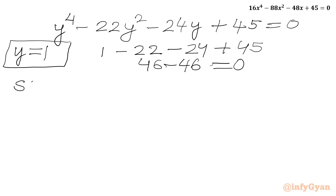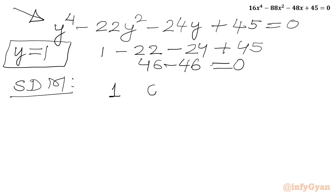Now we can use the synthetic division method. In this method we will write all the coefficients of the quartic equation. Coefficient of y⁴ is 1, coefficient of y³ is missing so we write 0, coefficient of y² is negative 22, coefficient of y is negative 24, and the constant is 45.